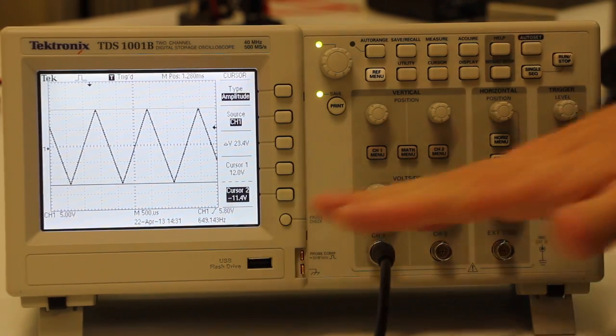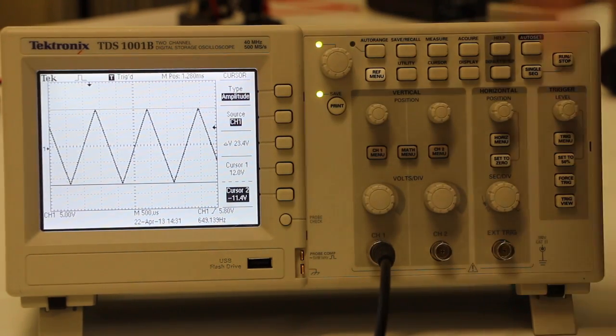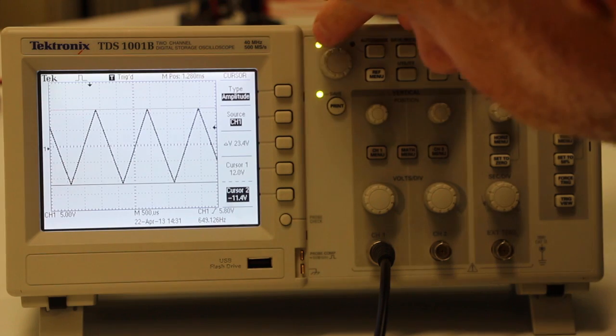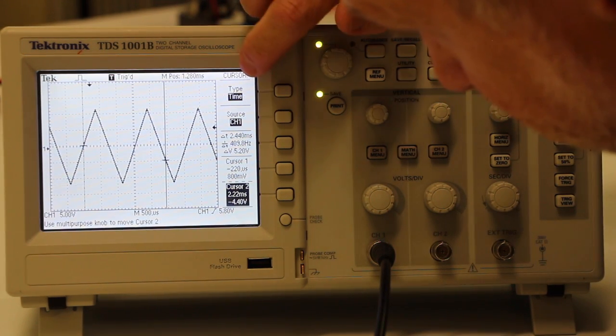If instead of measuring the voltage, the vertical, you want to measure a time, what you can do is change type to time, and now you've got vertical cursors.